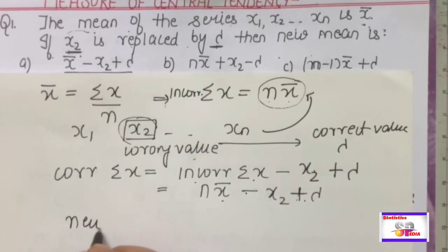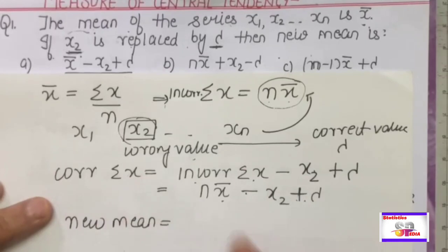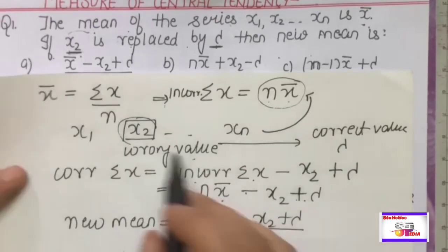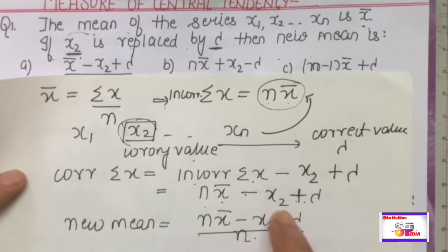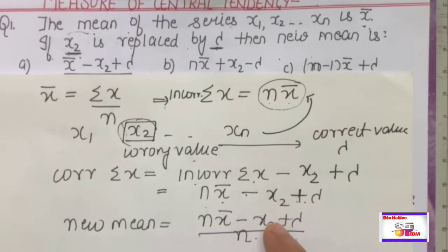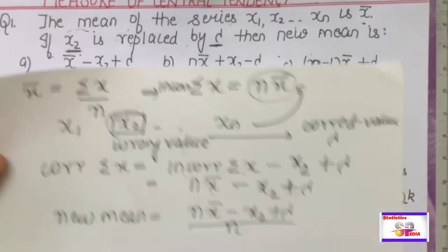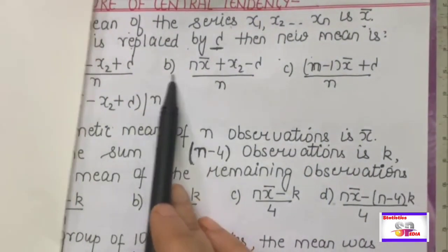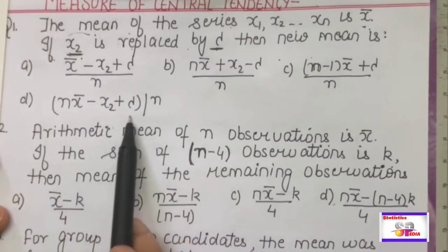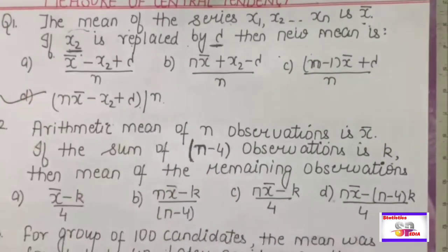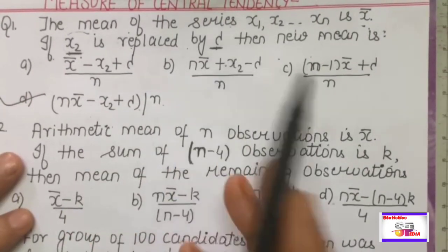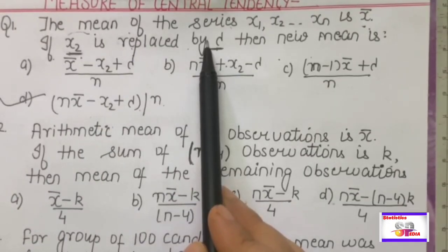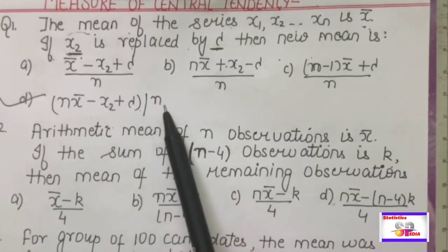Now we need the new mean. The corrected Σx is n·x̄ - x2 + lambda, divided by the total number of observations n, because the number of observations remains the same — we simply replaced x2 with lambda. So the new corrected mean = (n·x̄ - x2 + lambda) / n. This is the answer. The option with +x2 is wrong; logically we minus the wrong value and add the correct one.